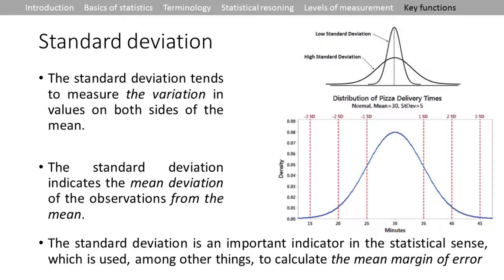There is also a practical figure showing pizza delivery times. The mean value is 30 minutes — the average delivery time — and one standard deviation is five minutes, so two standard deviations is 10 minutes.